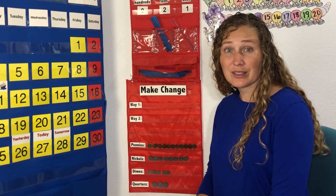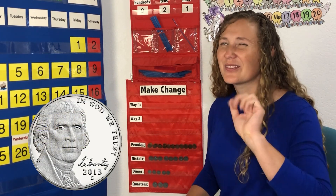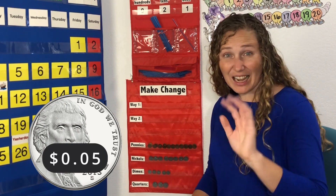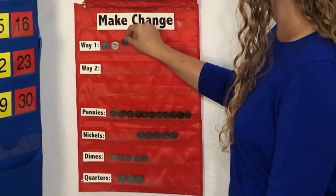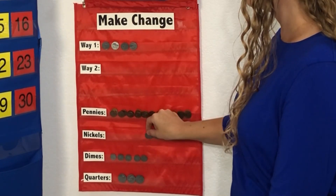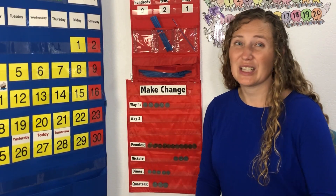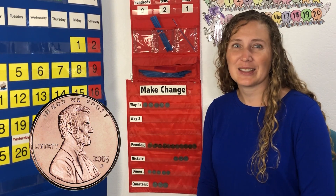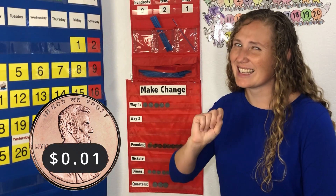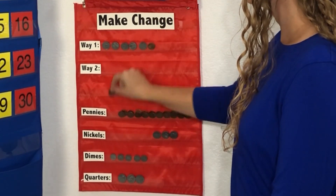Now let's make 27 with change. What type of coins would you like to use? Do you want to use nickels? Nickels are worth five cents. Let's count by fives: five, ten, fifteen, twenty, twenty-five. Five nickels makes 25, but we're not quite to 27 yet. 25 is less than 27. Now we'll need to use pennies. Pennies are worth one cent. 25, 26, 27.